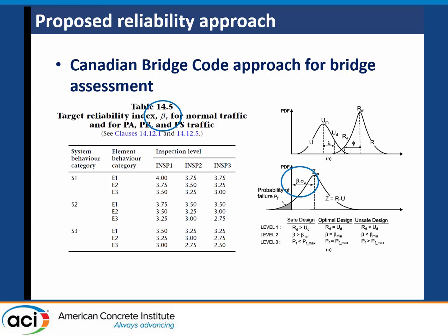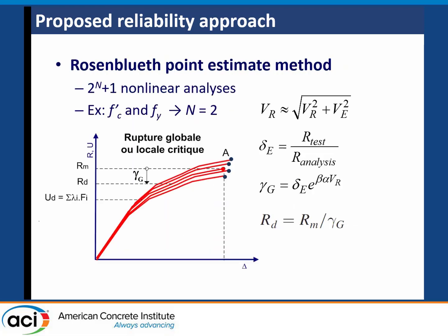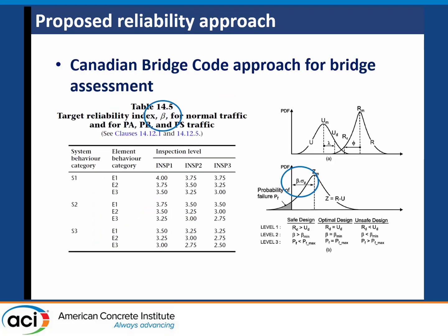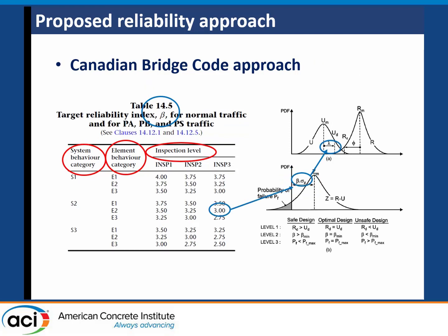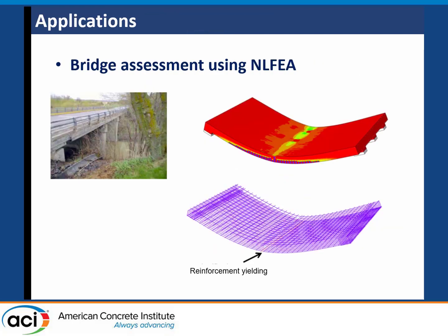As an example of how we do this in Canada: you need a beta value — your reliability index, based on statistics. When we do bridge evaluation in Quebec and Canada, we select the beta value from three parameters: system behavior, element behavior, and inspection level — specifically whether the element is inspectable or not. Then you pick that beta value and proceed with the analysis.